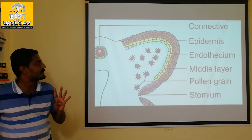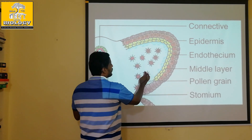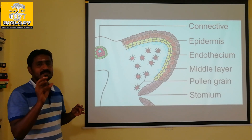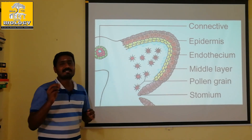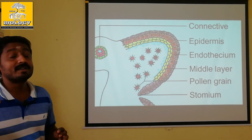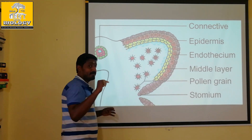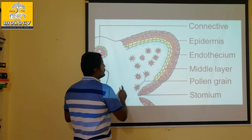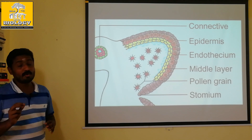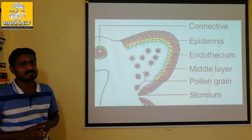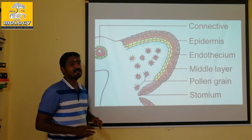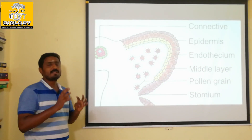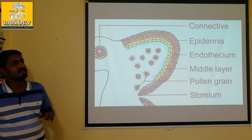The microspore will develop into a pollen grain. In the microspore there is an outer layer — the exine and intine — and the development stages are formed. The microspore and pollen grains are somewhat different: in the pollen grain there is an exine and intine, and that is how the pollen grain is formed.